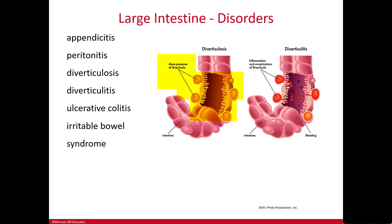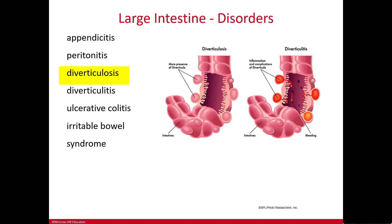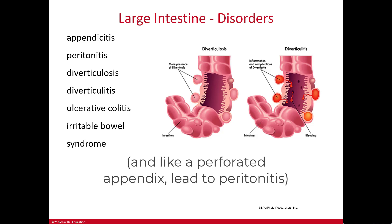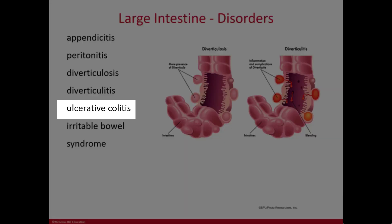Diverticulosis is the presence of diverticula — small pouches that bulge outward through weak spots in the lining of the intestine. You can have a few or hundreds along the large intestine. If asymptomatic, the condition is diverticulosis; if the pouches become inflamed or infected, it's diverticulitis. Diverticulitis causes abdominal pain, vomiting, fever, and constipation, and can lead to perforation. The most likely cause is a low-fiber diet, which slows fecal movement through the intestine.